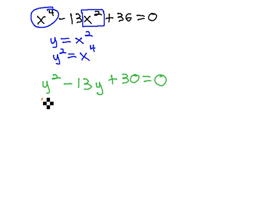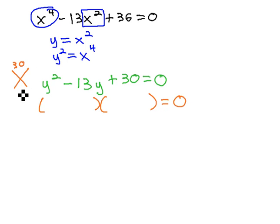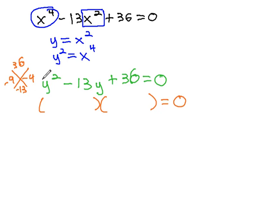The easiest way to solve a quadratic equation is by factoring. In this problem, we'd want to multiply to 36 and add to negative 13. That works nicely with 9 and 4, both negative. Because there's a 1 in front of y squared, we have y minus 9 and y minus 4 as our two factors.